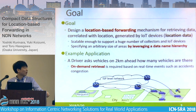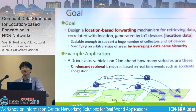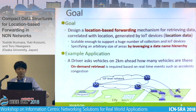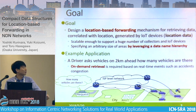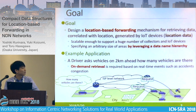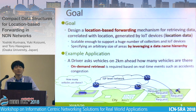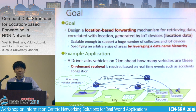I'll show one example application using this system. It's a congestion detecting application. A driver asks vehicles from 2km ahead how many vehicles are there. For example, if you have left cars and want to go to area 1, and it wants to know how many vehicles are there, it sends a request to the network and all cars in the area receive it. Only one retrieval is required based on real-time events such as accident or congestion.